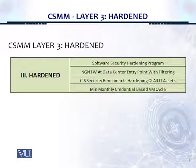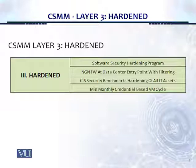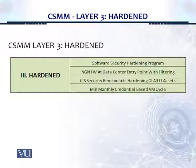These are the controls at Layer 3. The first is Minimum Monthly Credential-Based VM Cycle — we've moved from Quarterly to Monthly. The second is CIS Security Benchmarks Hardening of All IT Assets. The third control is Next Generation Firewall at Data Center Entry Point with Filtering. And the fourth control is Software Security Hardening Program.